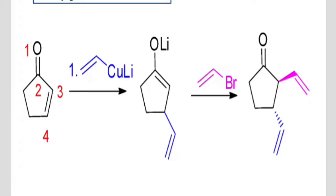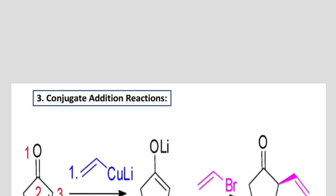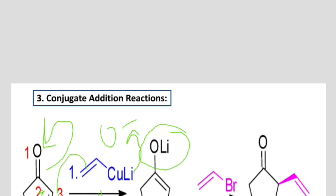The Gilman reagent tells us whether the addition is 1,4 or 1,2. Since the Gilman reagent is a soft nucleophile, it will attack on the carbon-carbon double bond position — that is, the fourth position. This bond will shift, the bond moves toward the oxygen, oxygen acquires a negative charge, and then lithium reacts with the negative oxygen to form an alkoxide, which attaches to this part.